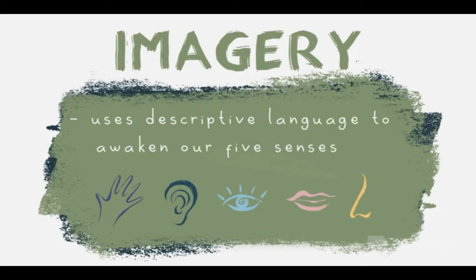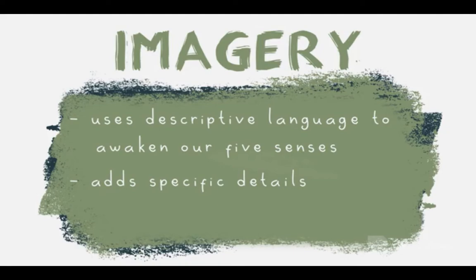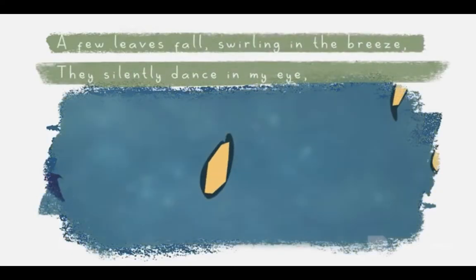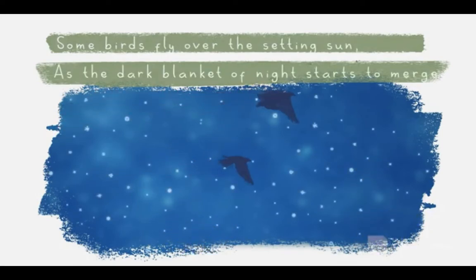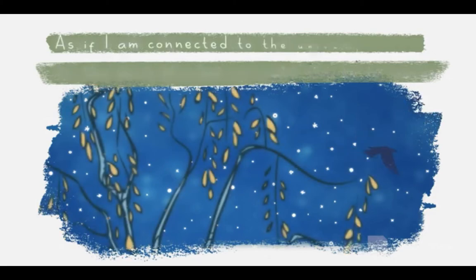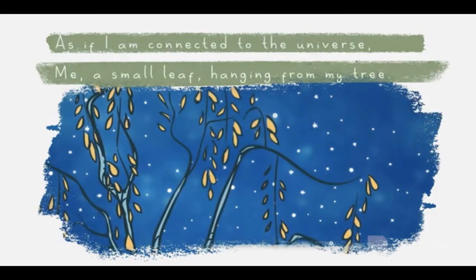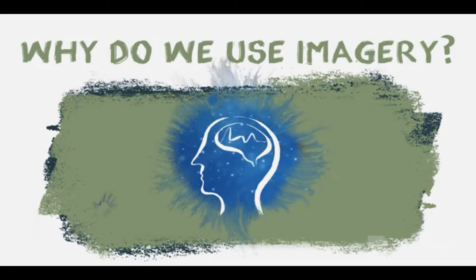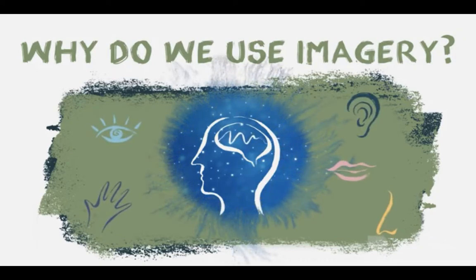Imagery is a poetic device that uses descriptive language to awaken our five senses. Imagery adds specific details to the work, and these details are like brush strokes that add depth and set the tone of the poem — like painting a picture with all available colours. The poet has used specific descriptions to bring their tree to life. The leaves don't just fall — they swirl and silently dance. Moonlit creatures chirp and camouflage with the dark blanket of night. Imagery stimulates the imagination, taking the audience to different places in their mind, helping them to feel, see, hear, smell and taste the world within the poem.